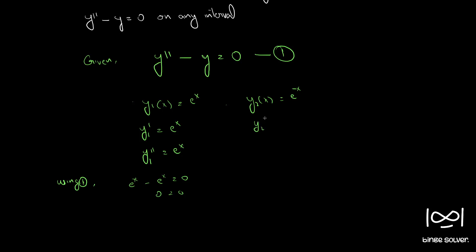Similarly, y2 dash is equal to minus e raised to minus x and y2 double dash is equal to e raised to minus x. So minus minus gives positive. We see here also e raised to minus x minus e raised to minus x is equal to 0, giving 0 equal to 0. So since these two functions satisfy this differential equation, on substitution it reduces to identity. So these two are solutions.